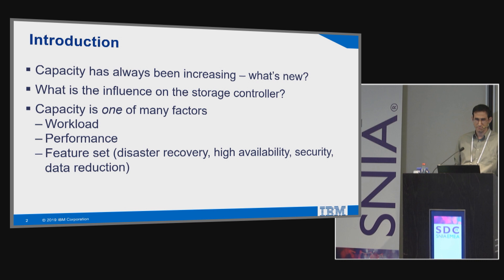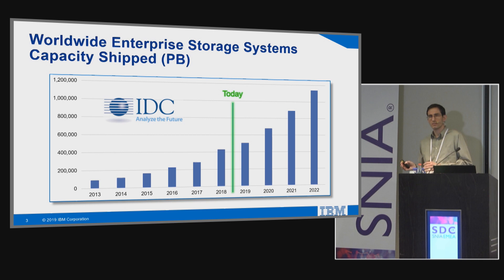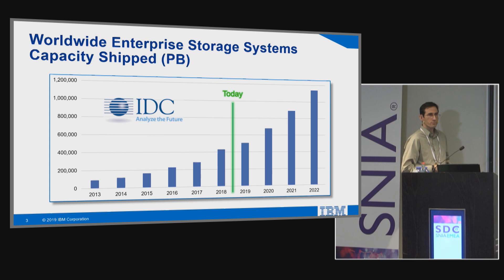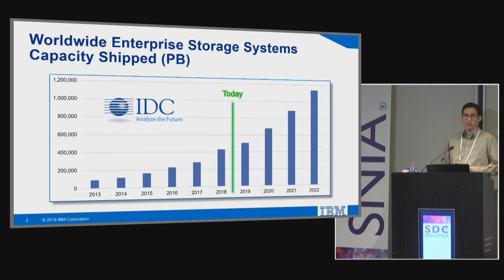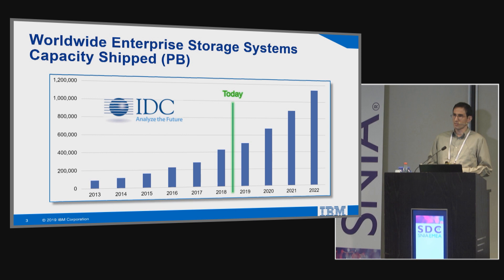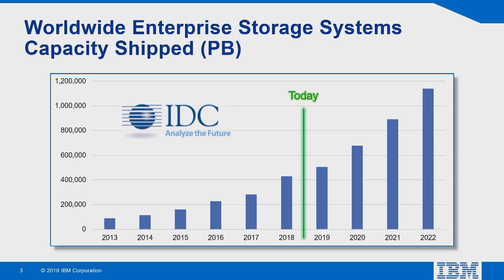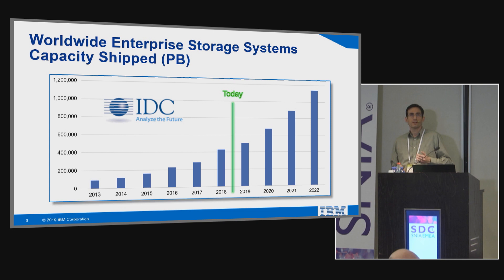We all know rules of thumb about how capacity increases over time, but I prefer to rely on professional market research. Looking at IDC data for enterprise storage systems, we can see that shipped capacity increases or doubles roughly every three years. Specifically in 2019 there is a slightly more moderate increase, but it averages out — capacity is going to continue increasing in the near future.